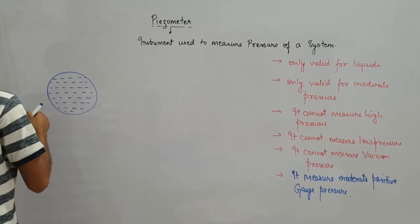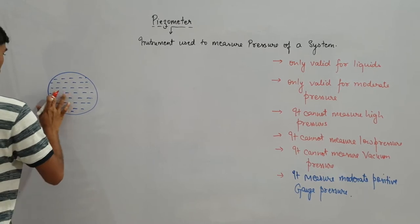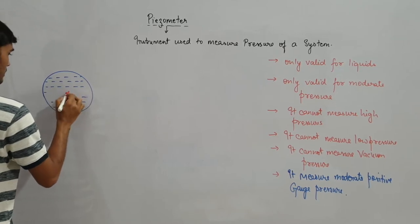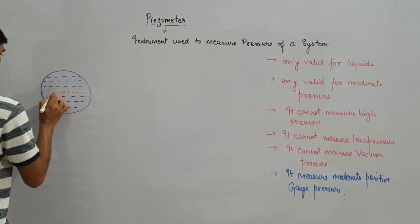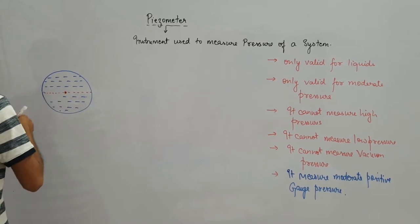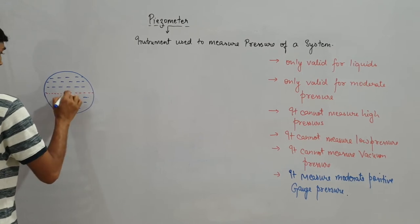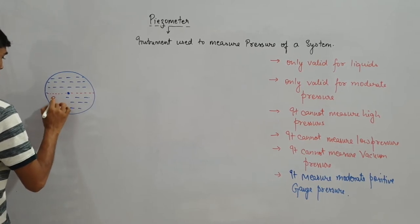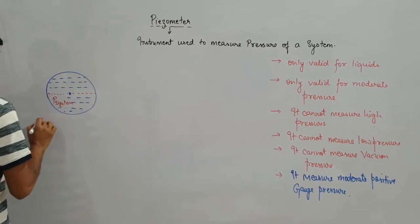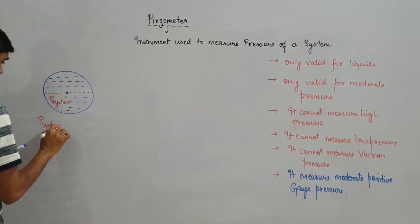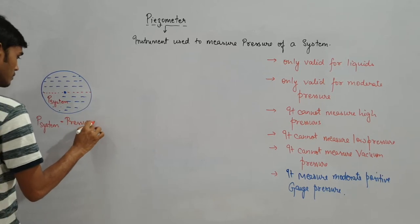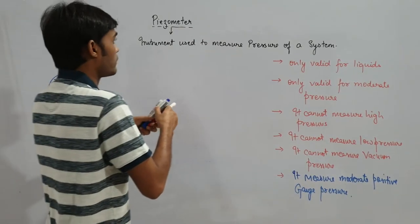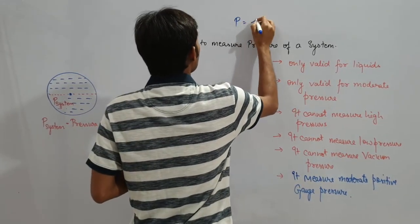Let this be the center here. And let pressure of the system be P system. That means we are taking P system as the pressure of the system. We will use the formula P is equal to rho H G.